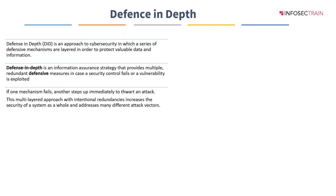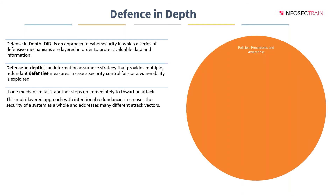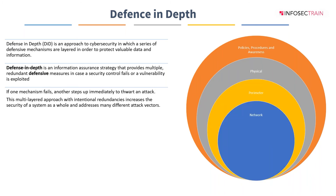Defense in depth includes a series of controls, starting right from policies and procedures to antivirus. At the top you have policy and procedures, then physical controls, perimeter controls, network controls, host-based security like HIDS and HIPS, then application-based security, and then database security.